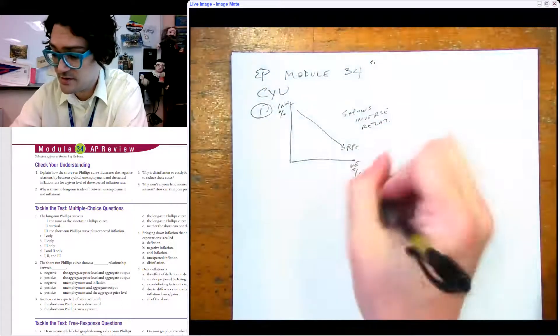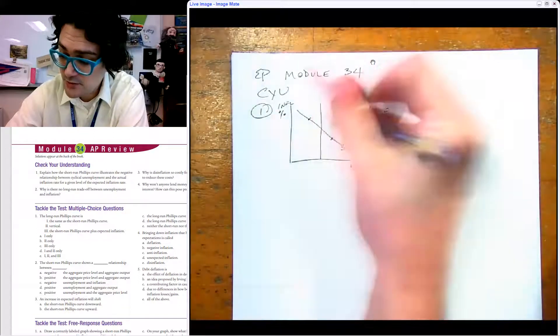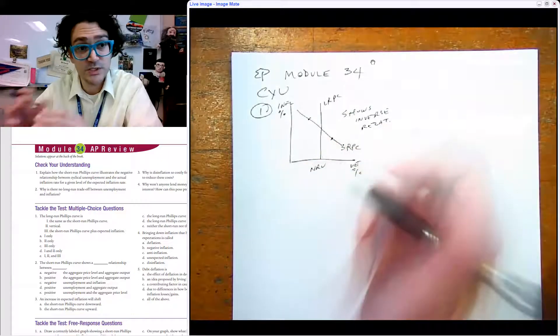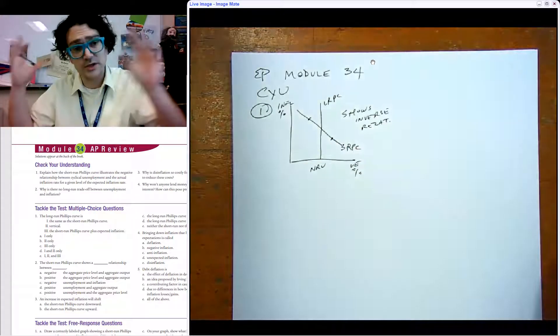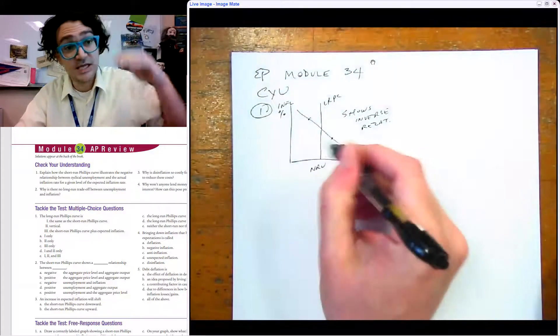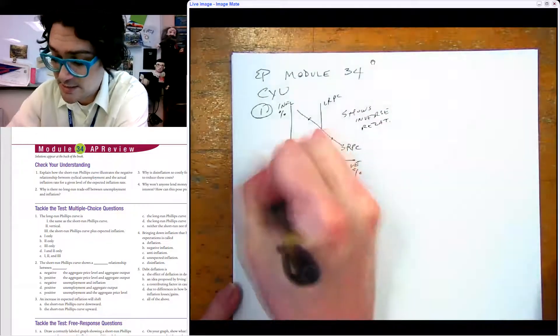When you go from point A to point B on here, we know that there's a long run Phillips curve that exists at the natural rate of unemployment. The natural rate is just there regardless of what the inflation rate is. But the cyclical kind of ups and downs, we can go along the short run Phillips curve.